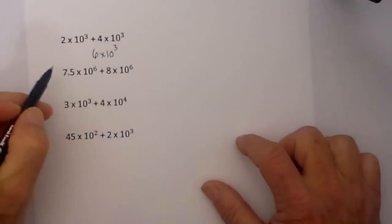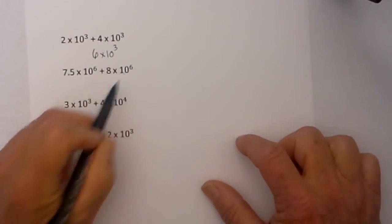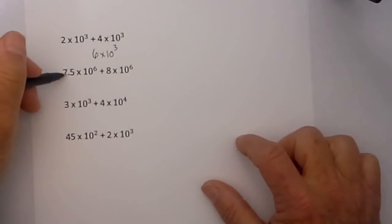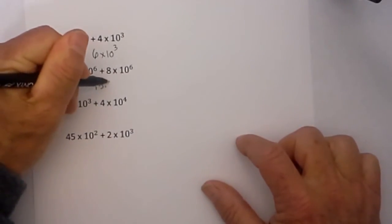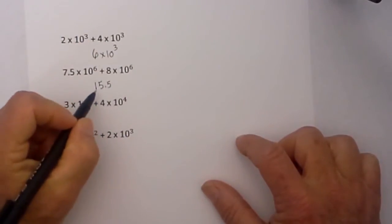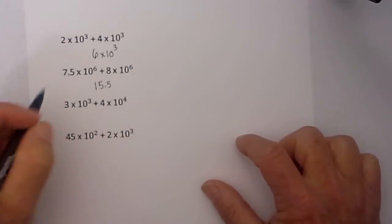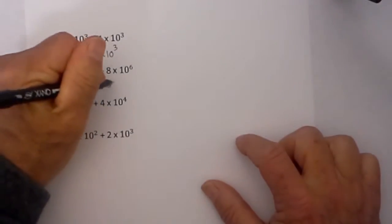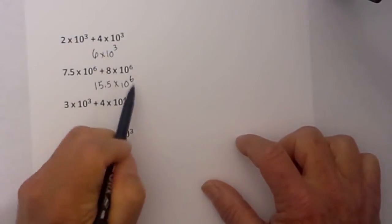In this next example, if you look, the powers are the same and the exponents are the same, but when we add 7.5 plus 8 we get 15.5 and notice that it is not between 1 and 10, the coefficient, so we need to make an adjustment to that. And so after adding, we have 10 to the sixth.